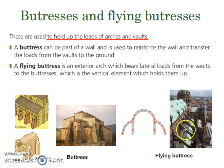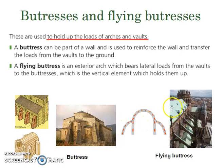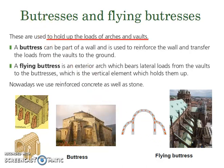The flying buttresses — arbotantes — are also very easy to distinguish. If you look here, there is a vault, and it is supported by an arch — that is the flying buttress. Here in the interior there is a vault, and here we have the flying buttresses, which sometimes lead down to buttresses or buttress walls. Nowadays we use reinforced concrete as well as stone to build them. Thank you for your attention, see you in class.